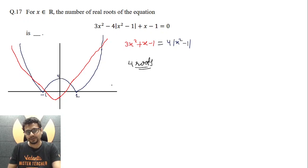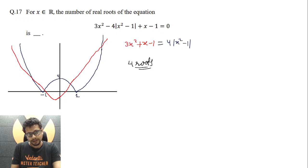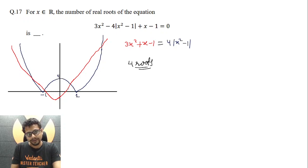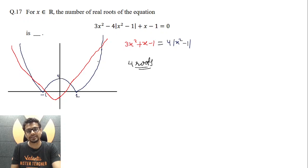Just to emphasize once more: since the coefficient 4 is present on the right-hand side, that parabolic part decreases faster than the red part. Why? Because here the coefficient of x² is only 3. Similarly, it will increase slower — the red part increases slower compared to the blue part. And hence, there are four intersection points and four solutions. So this is the best way to do this. This was Method 1.